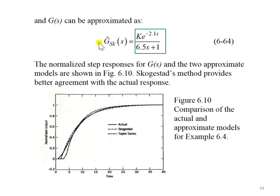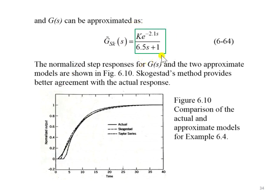Putting together, the approximated FOPDT based on Skogestad's approximation is given by this transfer function.